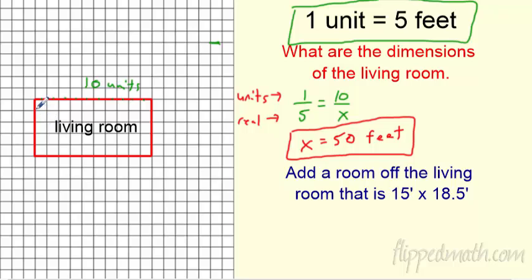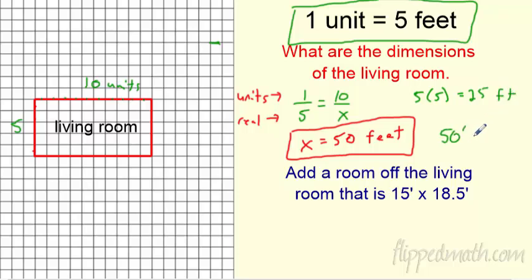Counting the other side, it's five units. Five units times five feet per unit equals 25 feet. So the real-life dimensions of the living room are 50 feet by 25 feet.